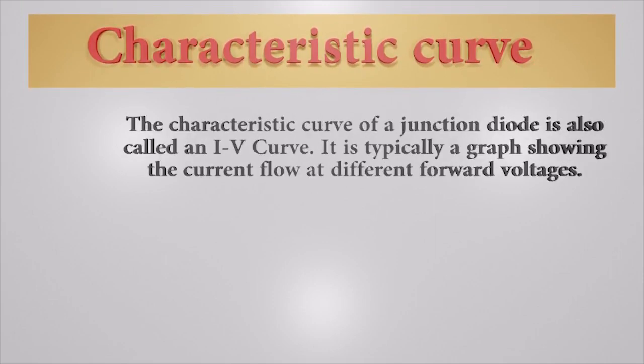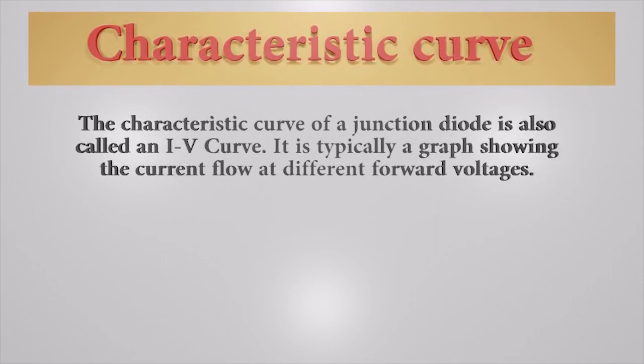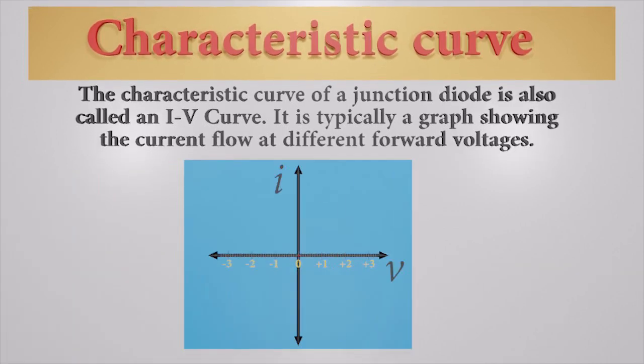Let's try to understand the characteristic curve of a p-n junction diode. The characteristic curve of a junction diode is also called an IV curve. It is typically a graph showing the current flow at different forward voltages. The current is typically on the y-axis and the voltage on the x-axis.